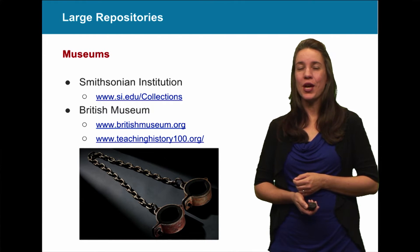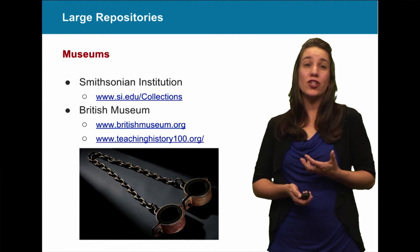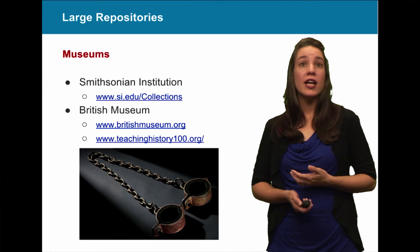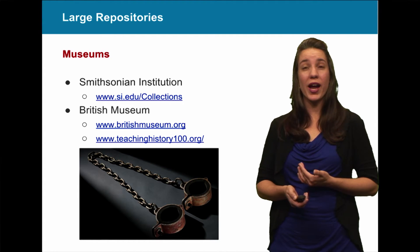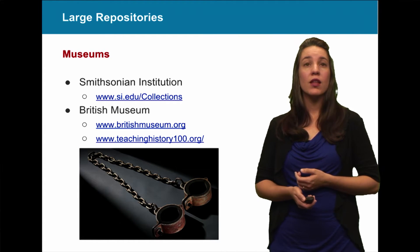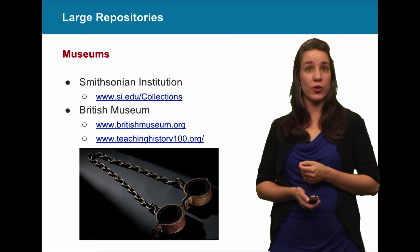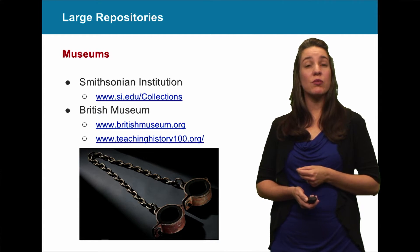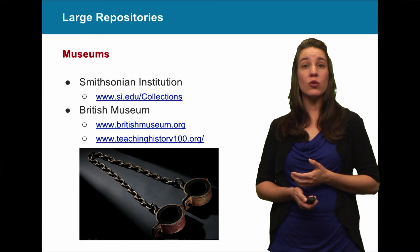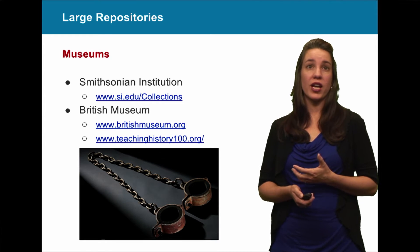Don't forget about museums — they're one of the best places to find artifacts because museums are collecting institutions. The Smithsonian Institution has more than a dozen museums and you can view their collections online, searchable by subject or object group. The British Museum is another great resource at britishmuseum.org, but also the educator-focused website listed below, which includes 100 objects from history to help teach the story of British history and the world.